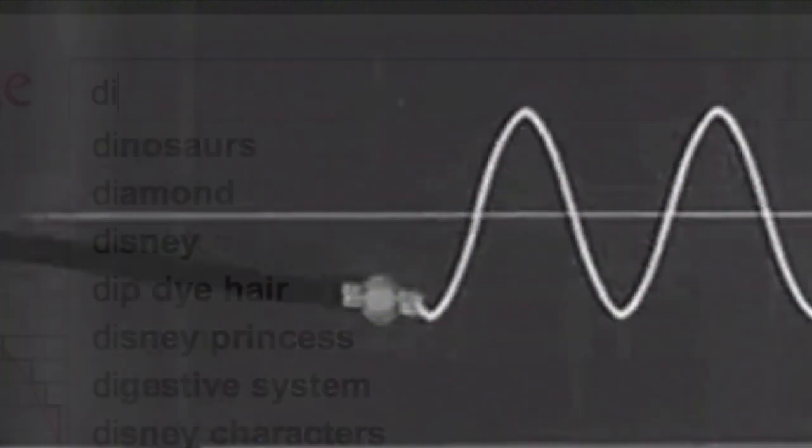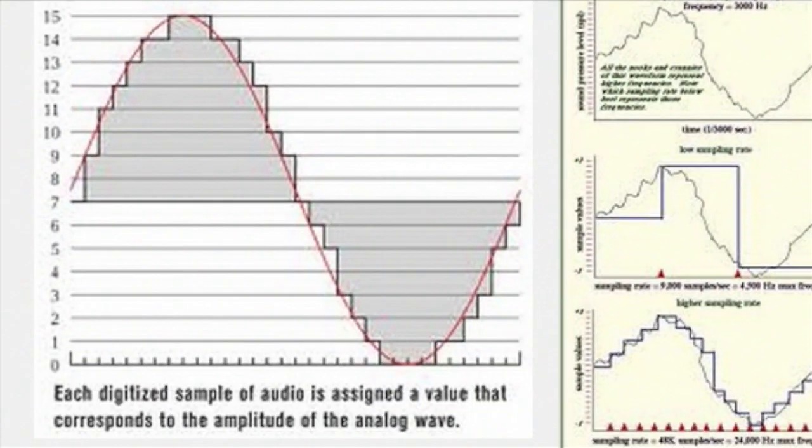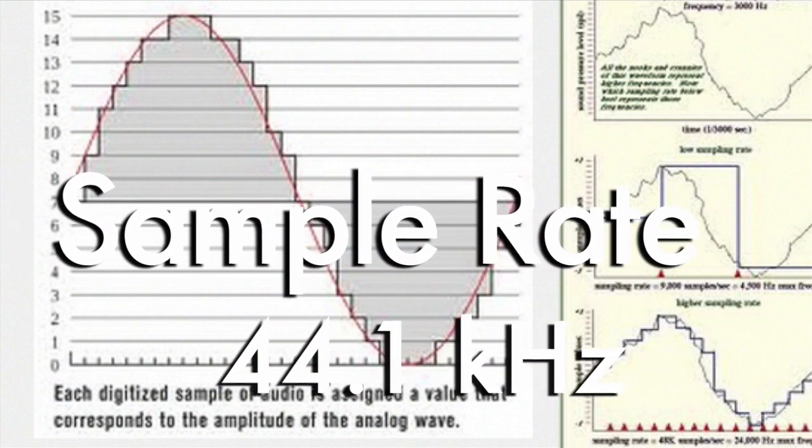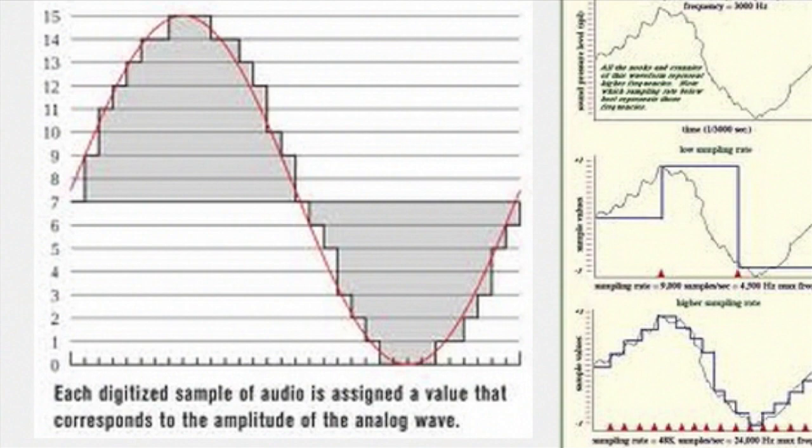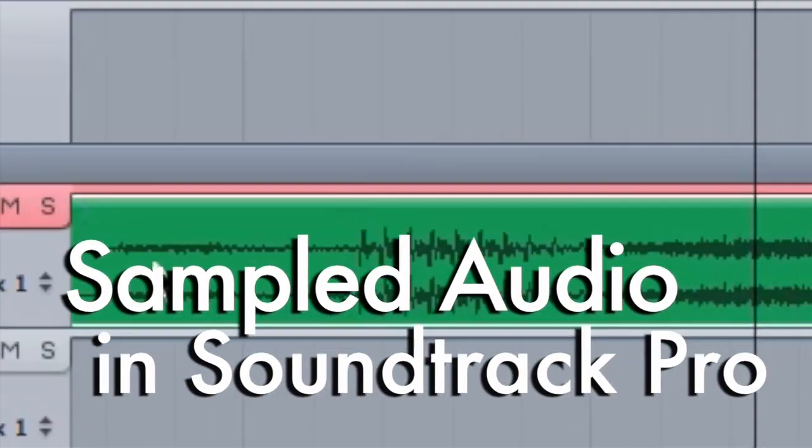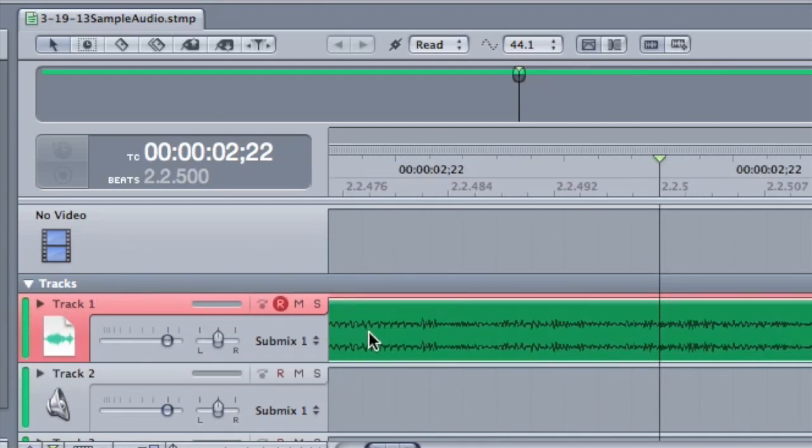We say recording, but it's actually sampled into the computer system. And it samples the frequency and amplitude at 44,100 times per second. And here you see this digitally sampled audio on the timeline in Soundtrack Pro.